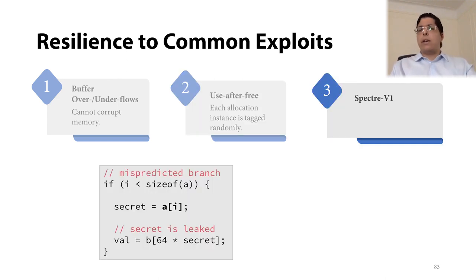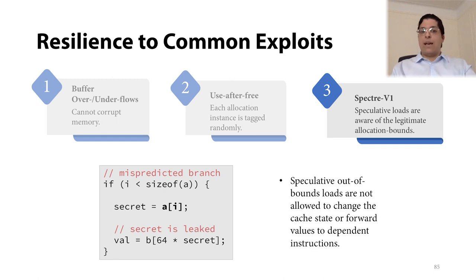Finally, let's look at the speculative execution attacks. The code snippet here is a minimal example of Spectre V1, which is also known as bounds checking bypass. Normally, the load from A to secret can be reliably accessed with an out-of-bounds index i. However, with NoFat in place, speculative load instructions are aware of the legitimate allocation bounds. As a result, speculative out-of-bounds loads are not allowed to change the cache state or forward values to dependent instructions, effectively breaking the attack.